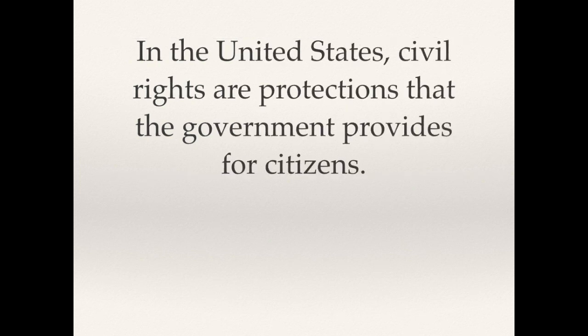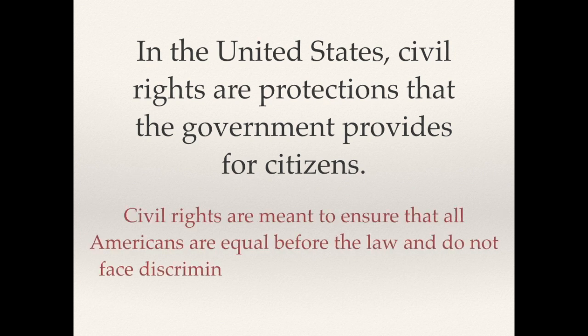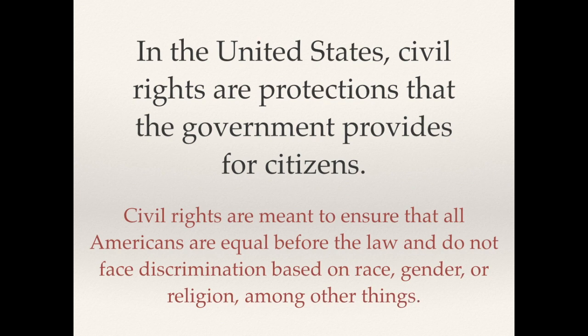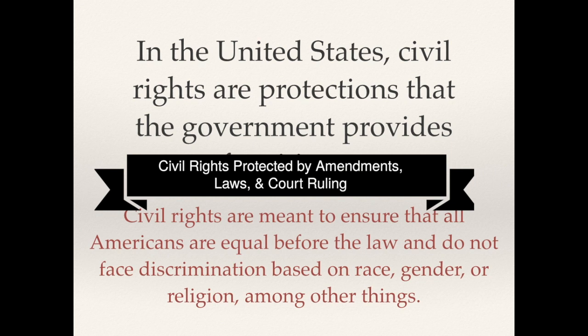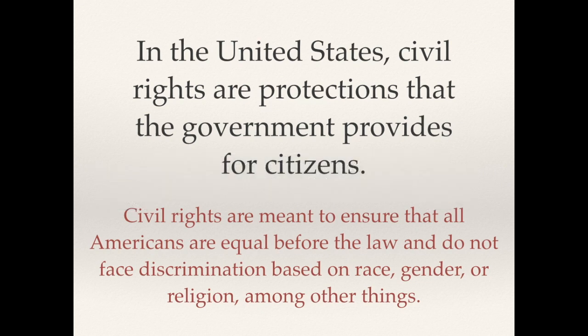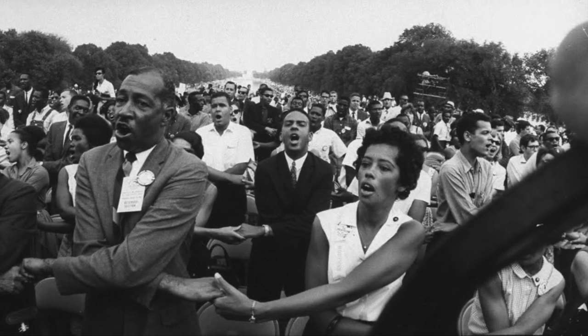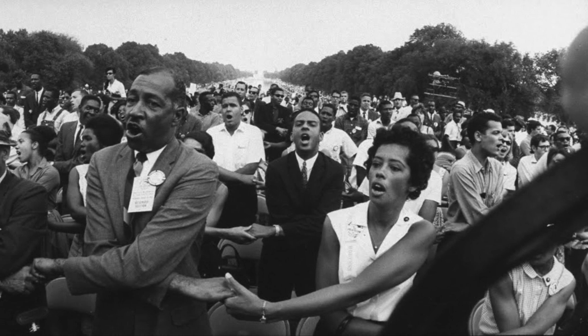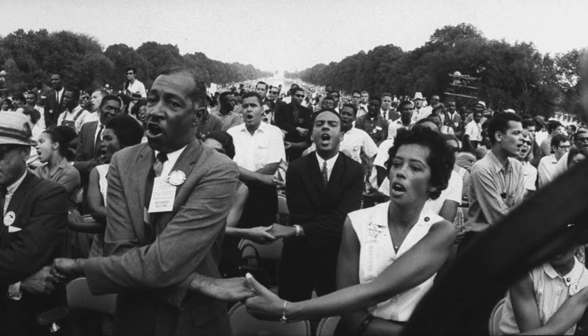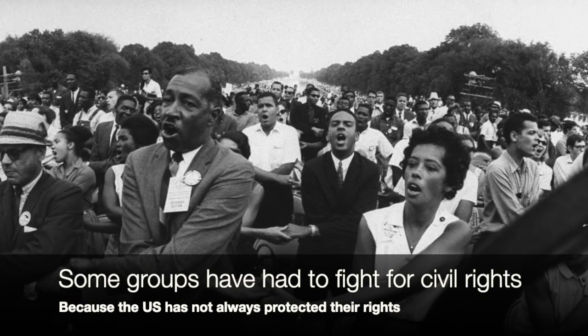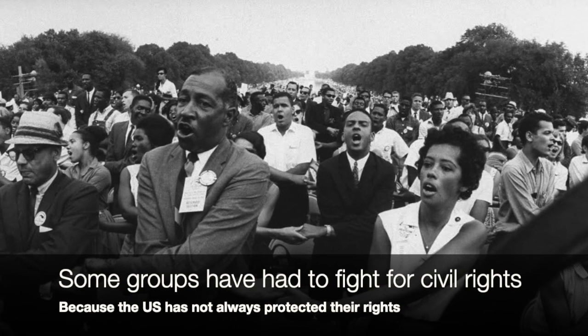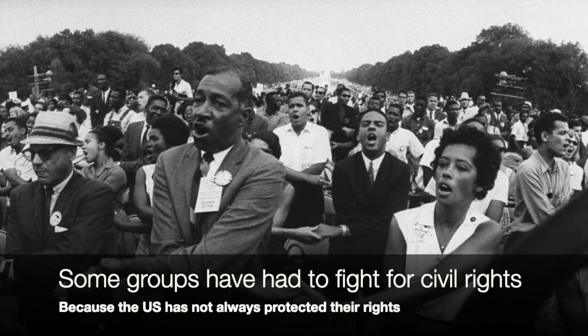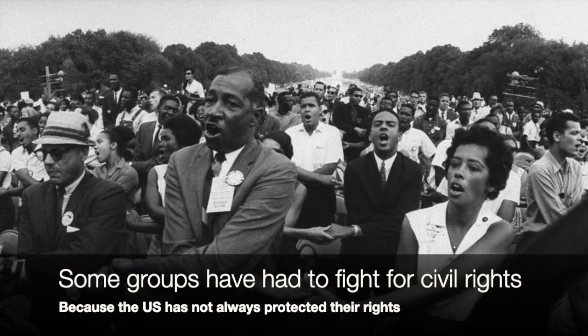In the United States, civil rights are protections that the government provides for citizens, meant to ensure that all Americans are equal before the law and do not face discrimination based on race, gender, or religion, among other things. Most civil rights are protected through constitutional amendments, federal laws, and Supreme Court rulings — all meant to prevent federal and state governments as well as businesses from depriving individuals of their natural rights. While the framers recognized the importance of civil rights, the U.S. has not always protected the rights of all citizens, and as a result, some groups have had to fight to have their civil rights acknowledged and protected.